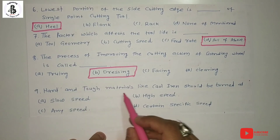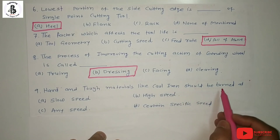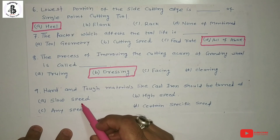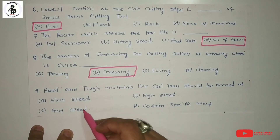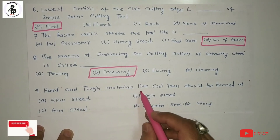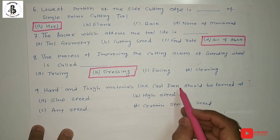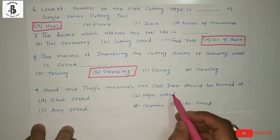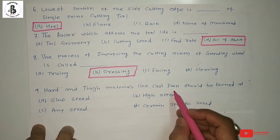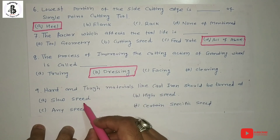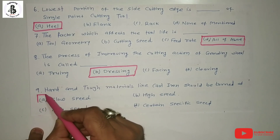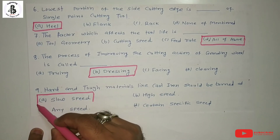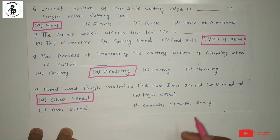Question 9: hard and tough materials like cast iron should be turned at what speed? Options: A) slow speed, B) high speed, C) any speed, D) a certain specific speed. Cast iron is a brittle material that produces segmental or discontinuous chips. This is controlled by using slow speed parameters to cut hard and tough materials like cast iron. So the answer is A, slow speed.